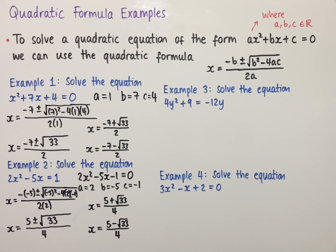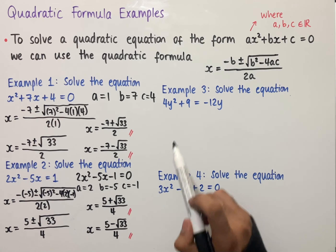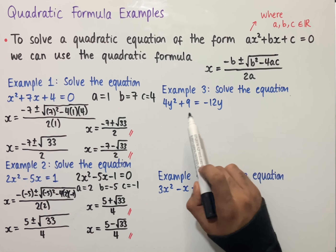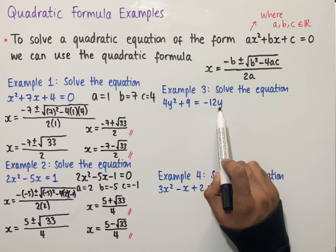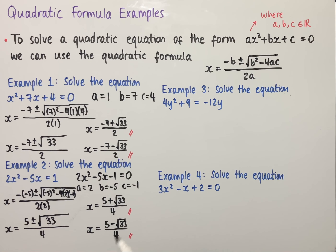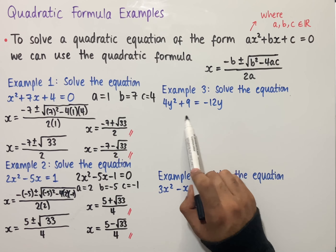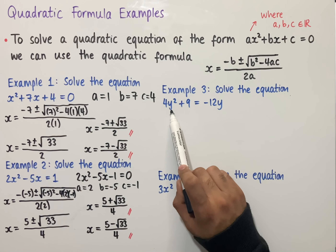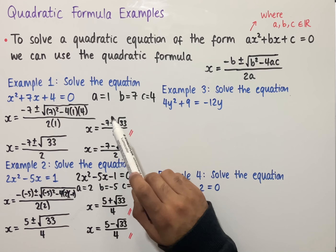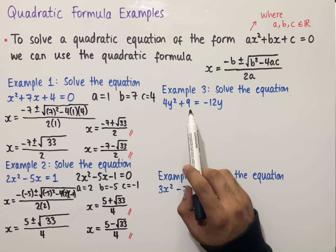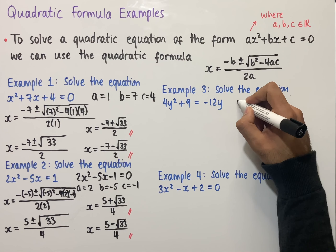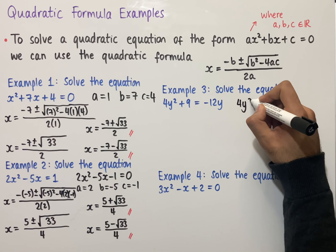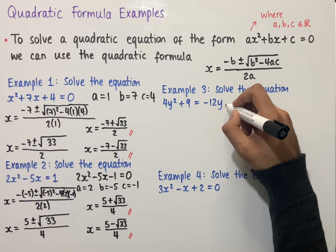So in this case we have two solutions: x equals 5 plus root 33 all over 4, and x equals 5 minus root 33 all over 4. Again, these are the exact solutions; we can substitute these into a calculator to work out the decimal values as well.